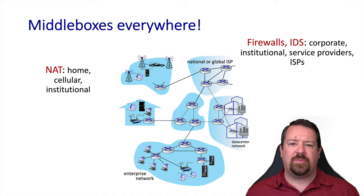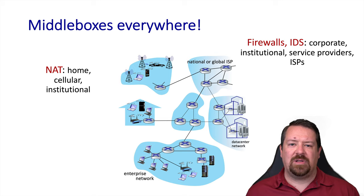Another common type of middlebox is a firewall. Note that while the same device may provide both a firewall and a NAT, these two are not synonymous — they provide distinct functions. Firewalls typically block traffic based on specific properties, which may consist of layer 3 or layer 4 header fields, or even properties of the application layer. Intrusion detection systems are another type of security middlebox, which may go much further than looking at individual packets and examine flows for behaviors deemed nefarious.